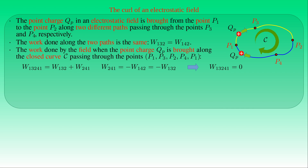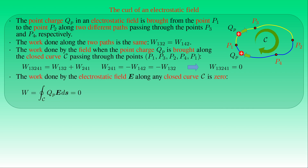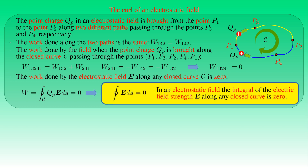The work done by the electrostatic field along any closed curve C is zero. That is, the line integral of the product of test charge QP and electric field strength E with respect to arc length S along the closed curve C vanishes. Since QP is constant, we conclude that the line integral of the electric field strength E along any closed curve is zero in an electrostatic field.